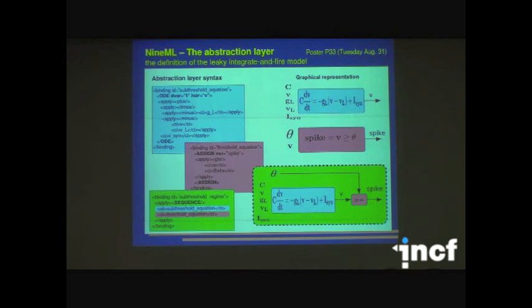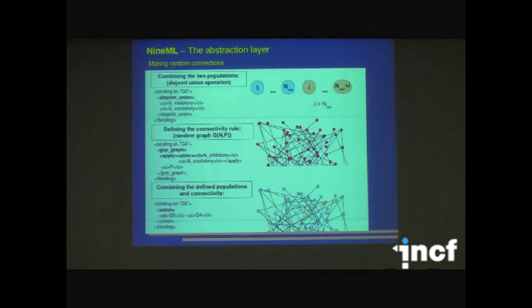And a complete subthreshold regime for integrate-and-fire neurons is a sequential operation. First, calculate the equation, and then check for spikes. And this is how we do it. You use a sequence command to combine these two together, that tells the simulator first calculate the equation and then check for spikes. So this is a small example of how we can define a subthreshold regime for integrate neurons. And this is an example of how we can create a random network.